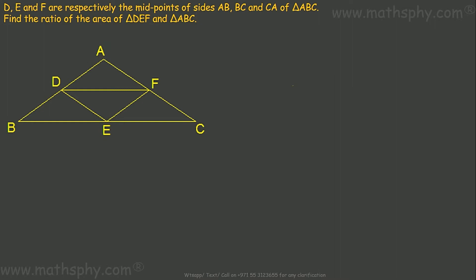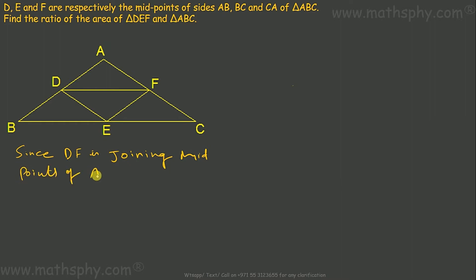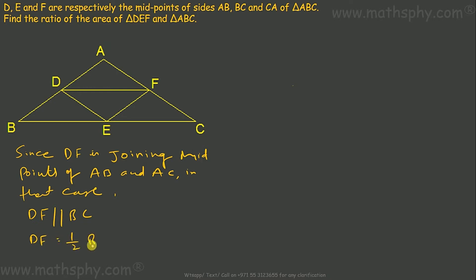D is the midpoint of AB and F is the midpoint of AC, which means DF is joining the midpoints of AB and AC. As per the midpoint theorem, when a line joins two midpoints of a triangle, that line is parallel to and half of the third side. So DF is parallel to BC and DF is half of BC.